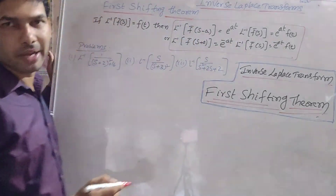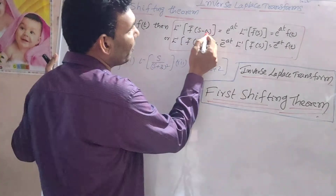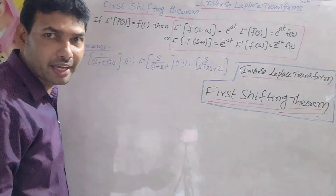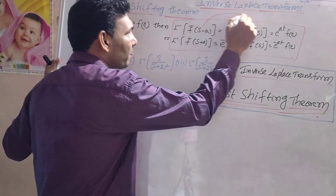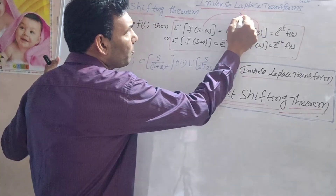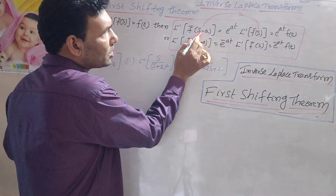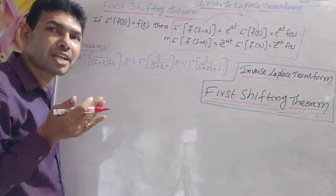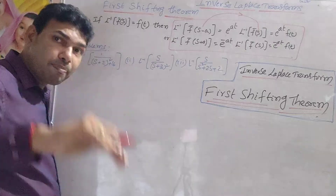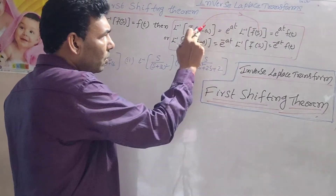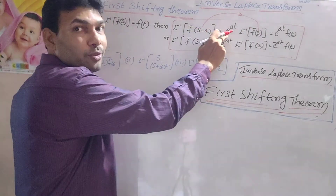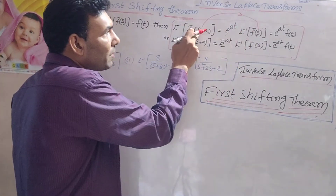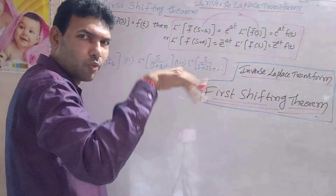L inverse of f-bar of (s minus a) is equal to e^(at) into f-bar of s. If you observe the same thing, in s-domain, replacing s with (s minus a) corresponds to multiplying by e^(at). That is the Inverse Laplace First Shifting Theorem: s minus a place gives e^(at) as a product. In the Laplace formula, f(t) with (s minus a) equals e^(at) times the result — that is the reverse, quite opposite.